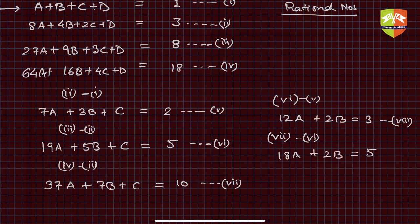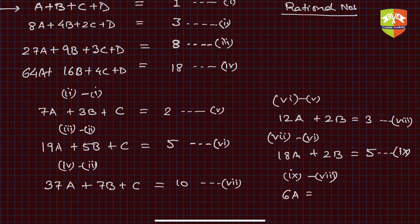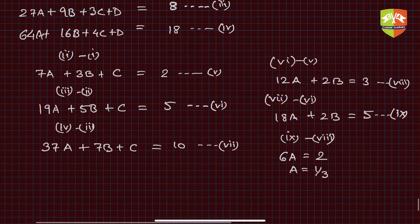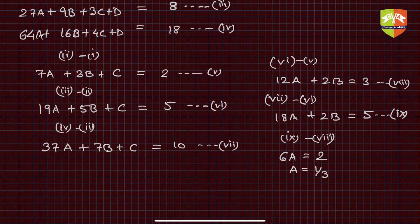From equation 9 minus equation 8, b cancels: 6a = 2, so a = 1/3. A slightly lengthy calculation but we have solved for a = 1/3. Now using equation 8 with a = 1/3: 12 × (1/3) + 2b = 3, which gives 4 + 2b = 3.